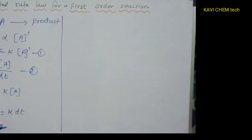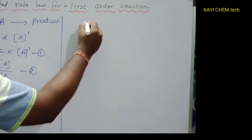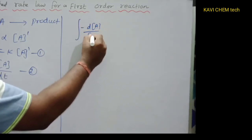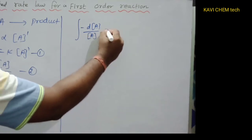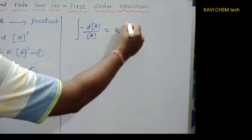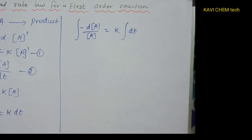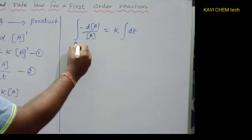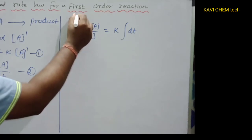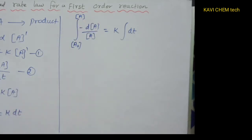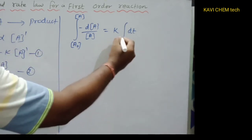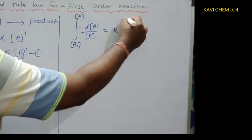I am going to integrate this equation. Hope you would have learnt integration already. Integrating minus dA/[A] equals K times integral of dt. We integrate with limits: the initial concentration is A₀ and final concentration is A; initial time is 0 and final time is t.